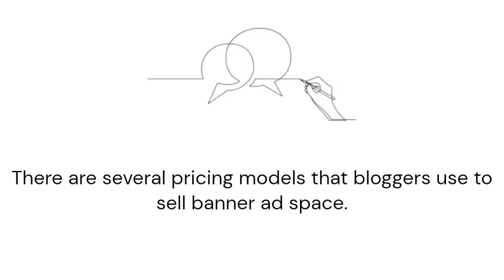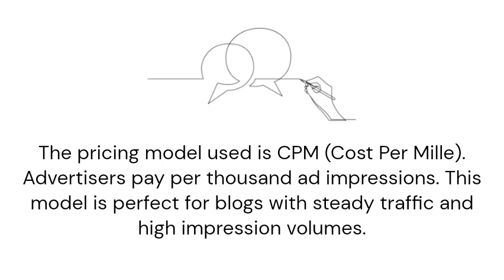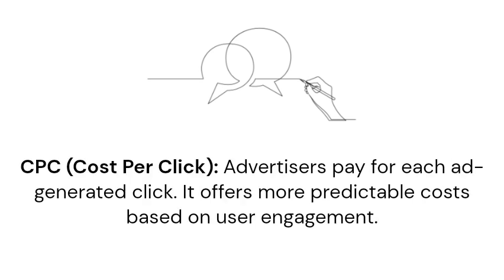There are several pricing models that bloggers use to sell banner ad space. The first is CPM, cost per mille — advertisers pay per thousand ad impressions. This model is perfect for blogs with steady traffic and high impression volumes. The second is CPC, cost per click — advertisers pay for each ad-generated click.